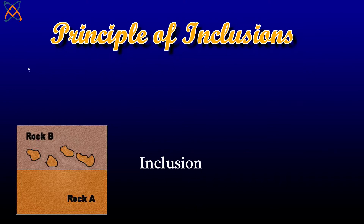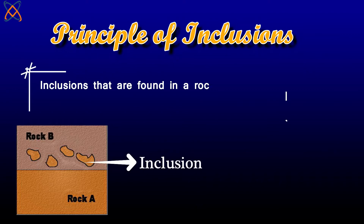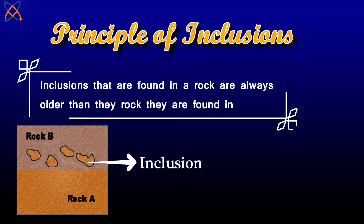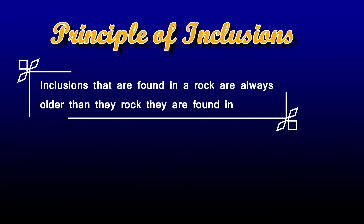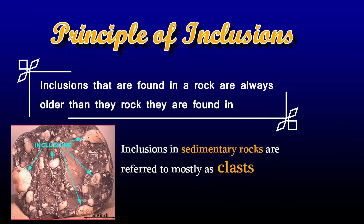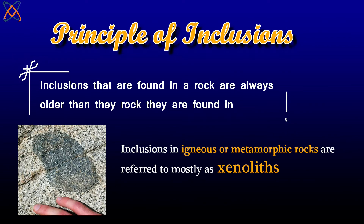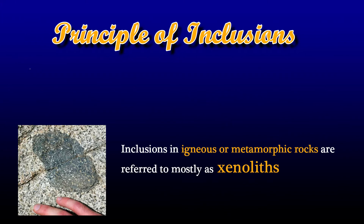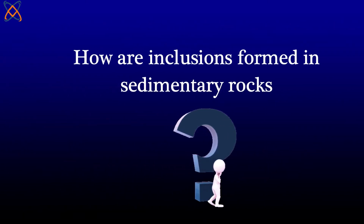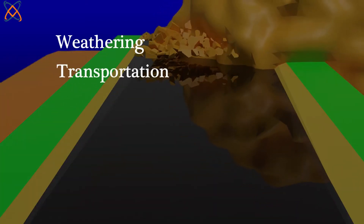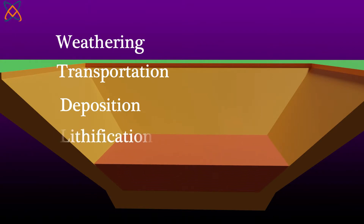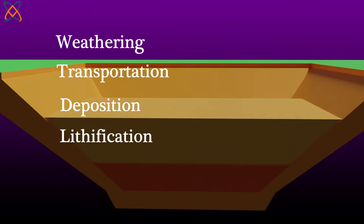Inclusions generally refer to fragments of rocks found in another rock. Inclusions in sedimentary rocks are referred to mostly as clasts, while inclusions in igneous or metamorphic rocks are referred to as xenoliths. Sedimentary rocks are formed from the weathering of pre-existing rocks, transportation, deposition, and lithification of sediments in a sedimentary basin.